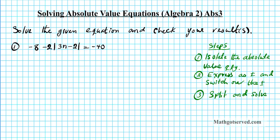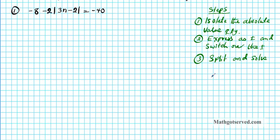Another thing to note when solving absolute value equations is that there are three possible solutions you can have: two solutions, one solution, or no solution. You can think of the solution to an absolute value equation as the intersection between an absolute value function, which is normally in the form of a V, and a line.